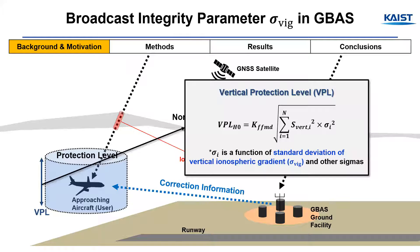The standard deviation of the vertical ionospheric gradient, sigma-vig, is included in the vertical protection level equation. Thus, special care must be taken to identify the broadcast value of sigma-vig to ensure user safety.